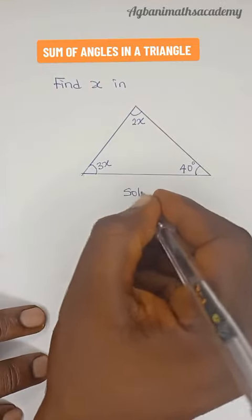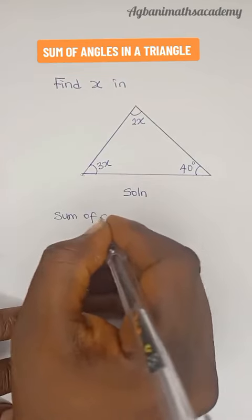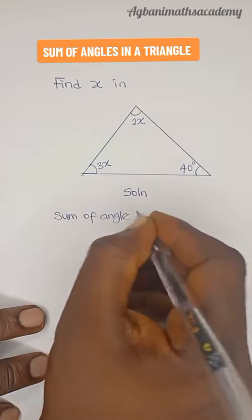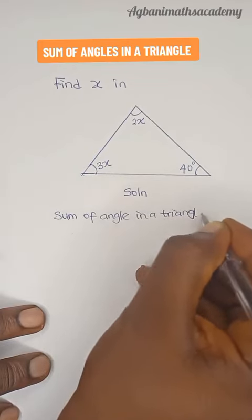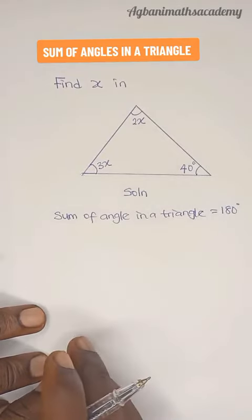Okay, so solution. Sum of angles in a triangle is equal to 180 degrees.